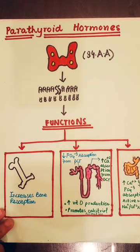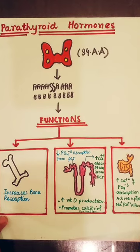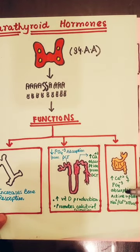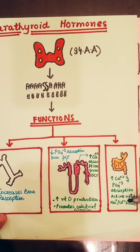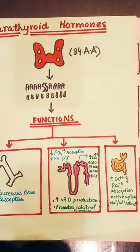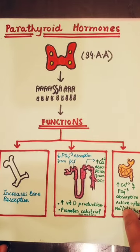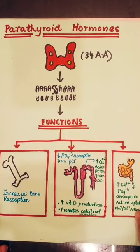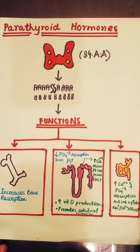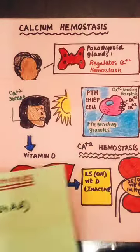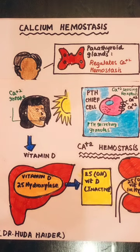The other role of parathyroid hormone is at the GIT level. Parathyroid hormone increases calcium and phosphate absorption from the GIT through active uptake via the sodium-potassium ATPase cycle.